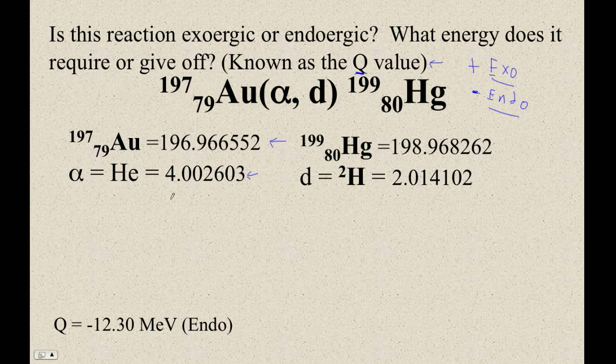So 196, don't round these, 0.966552 plus 4.002603. And this side is 200.969155. It's hard to look at the calculator and calculate that.